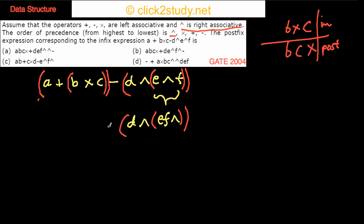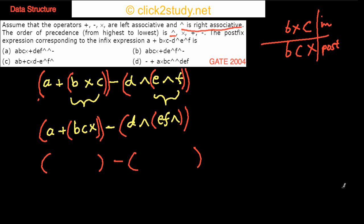We do the same for the other innermost parenthesis — writing B and C in postfix as 'BC' followed by the operator. Once a sub-expression is converted to postfix, we no longer need those parentheses, so we simplify and treat the postfix result as a single operand going forward.